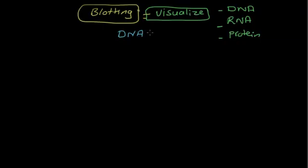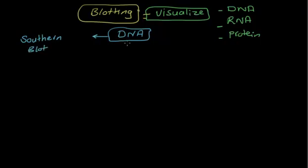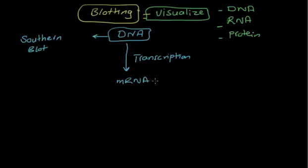At the DNA level, you visualize DNA using Southern blot. After DNA, there is a process called transcription, and after transcription you have mRNA. We focus on mRNA specifically because we're interested in protein, and mRNA is the only RNA that undergoes translation. So at the transcription level, how do you see the mRNA?